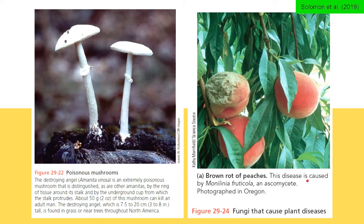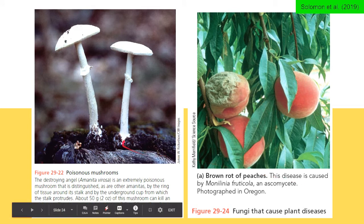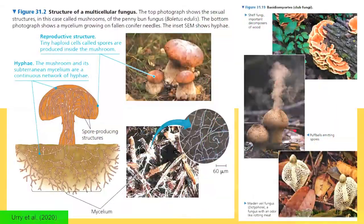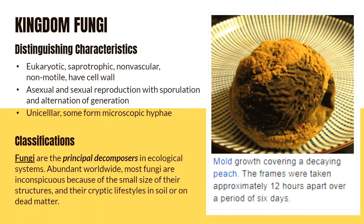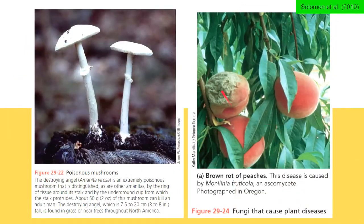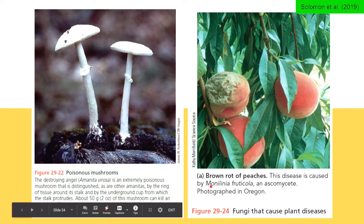You also have here a poisonous mushroom, destroying angel Amanita virosa — an extremely poisonous mushroom, so be very careful around that. And brown rot on peaches — what rots the peach are actually ascomycete Monilinia fructicola, a type of fungi that causes plant diseases.